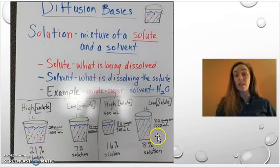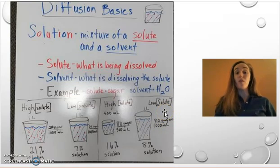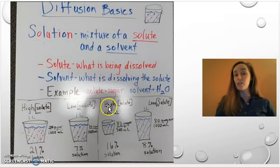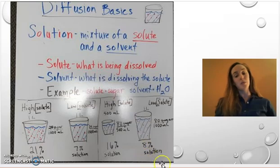Now, this cup, we have the exact same amount of sugar. There's still 80 sugar units, but our volume is twice as large. That's 1,000 milliliters. If you do the math, that means this is only an 8% solution.